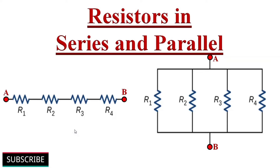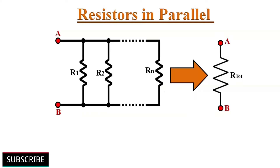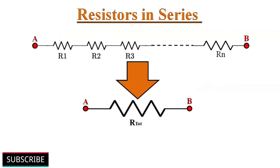Hello friends, welcome to YouTube channel Electronics. Today we will learn about how to find total resistance value when a number of resistors are connected either in series or in parallel combination. Resistors are said to be connected in series when they are connected one after the other — end to end in a single line. Resistors are said to be connected in parallel when both of their terminals are respectively connected to each terminal of the other resistors. By finding the equivalent resistance value, we can simplify or solve complex circuit problems.